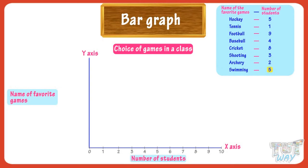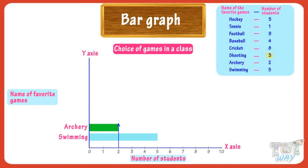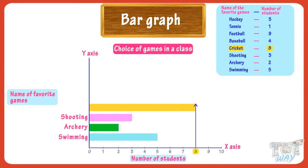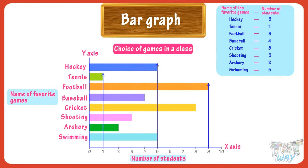On the y-axis we'll show the names of games and relate them to the number of students whose favorite game it is. 5 students like swimming the most, so make a rectangular bar on the y-axis up to the mark of 5 and label it with swimming. 2 students like archery, so make a bar up to the mark of 2 and label it with archery. 3 students like shooting, so make a bar up to mark 3 labeled shooting. 8 students like cricket, so make a bar up to mark 8 labeled cricket. Similarly, we can draw bars for all and our graph will be ready.